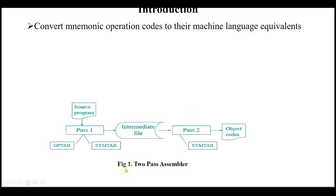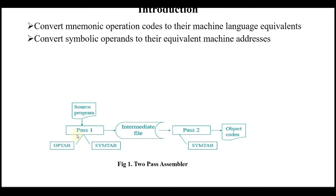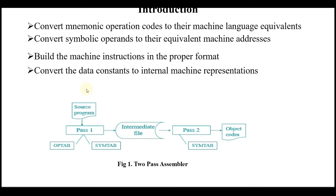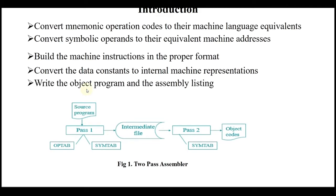In a two-pass assembler there are two passes. In pass one, the assembler converts mnemonic operation codes to their machine language equivalents — mnemonics like MOV, ADD, SUB are converted to machine language. Second, it converts symbolic operands to their equivalent machine addresses, assigning addresses to symbols. Third, it builds the machine instruction in proper format so it can be easily loaded by the loader. Fourth, it converts data constants into internal machine representation, assigning addresses to literals. Finally, it writes the object program and assembly listing — converting the source program to object code.